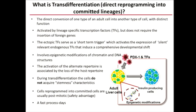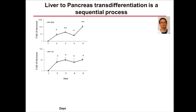Cells reprogrammed into committed lineages are usually post-mitotic — and I say usually because sometimes you get progenitors that do proliferate, but this is a self-safety advantage. As Mario said, the process is very fast and occurs within days. But in an effort to increase transdifferentiation efficiency, people are using more than one transcription factor, since the ectopic transcription factor activates endogenous transcription factors.